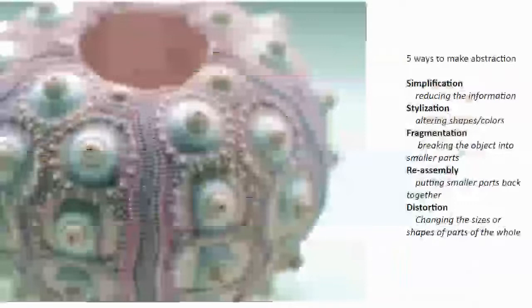We have stylization, which is altering shapes and colors. In the Mondrian painting of a tree — the first painting of a tree we saw by Mondrian — we see that he has removed the browns and greens that we might expect to see in that natural scene, the brown of the tree trunk and the green in the grass, and instead is really only using blue, red, and black. Fragmentation is breaking the object into smaller parts.